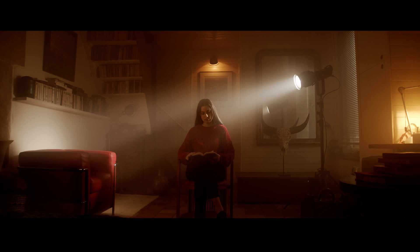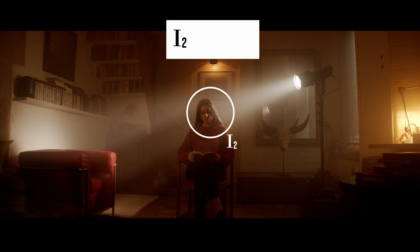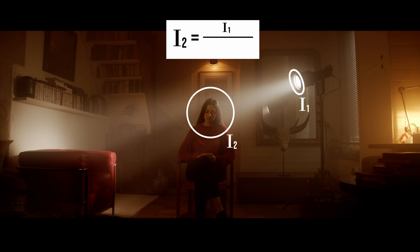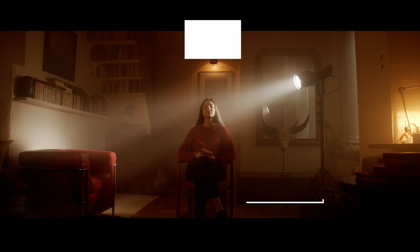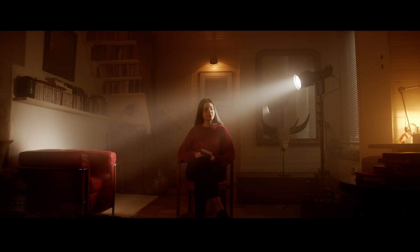The law states that the intensity of a light source at a certain point is equal to the amount of light that the source produces, divided by the square of the distance between the point and the source. But the mathematics of the law is not what we want to focus on right now — what we want is to understand the principle.